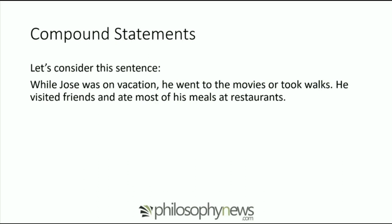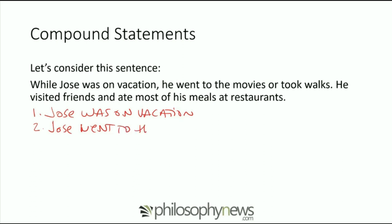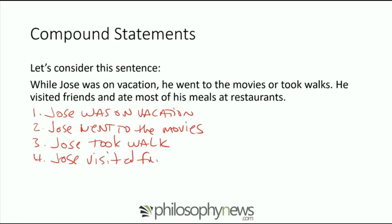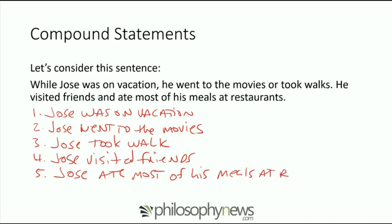Let's list the different claims being made. The first is: Jose was on vacation. The second is: Jose went to the movies. The third statement is: Jose took walks. The fourth statement is: Jose visited friends. And the last statement is: Jose ate most of his meals at restaurants. Those are all five simple statements embedded in that larger statement.